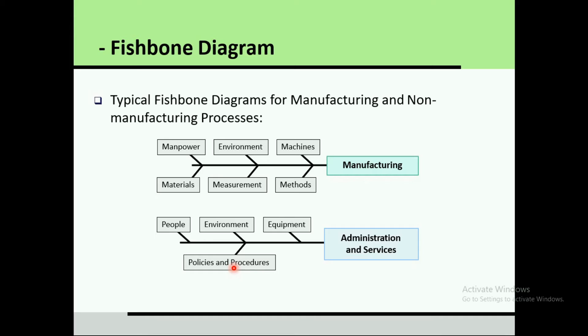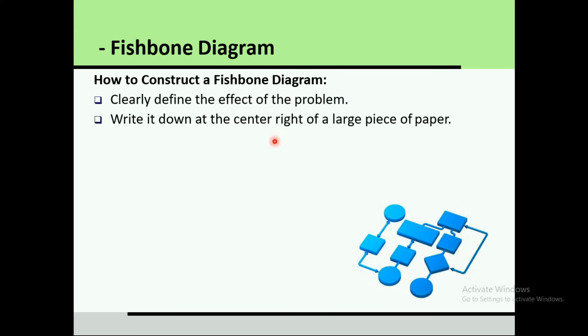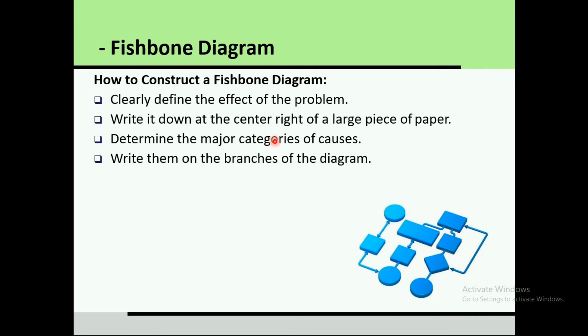Here are typical fishbone diagrams for manufacturing and non-manufacturing processes. To construct a fishbone diagram, first clearly define the effect or problem and write it at the center right of a large piece of paper. Then determine the major categories of causes — there may be many — and write them on the branches of the diagram. After that, identify sub-causes for each cause.